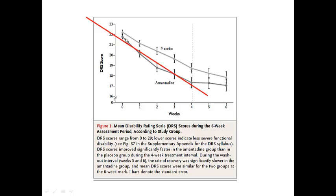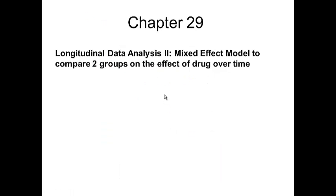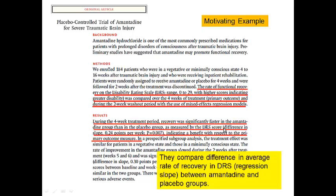In order to compare the rate of change between two groups, they included the cross-product term between treatment assignment and the time variable (weeks), and assessed the p-value for the interaction. The p-value for the interaction was significant. Therefore, they stated there was a difference in slope — the average weekly rate of change in DRS was 0.24 points, with a p-value of 0.007, indicating benefit with respect to the primary outcome with amantadine.